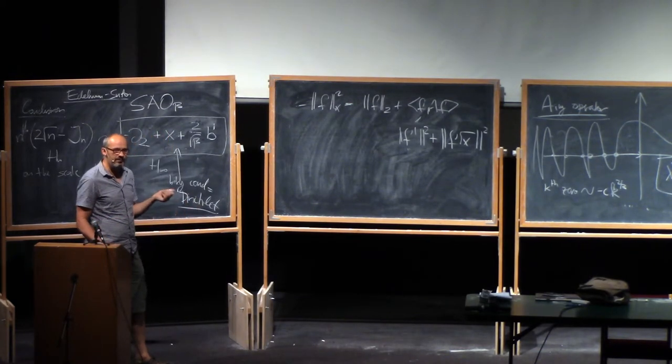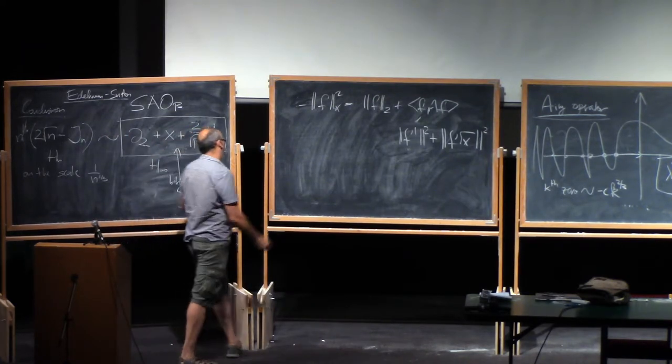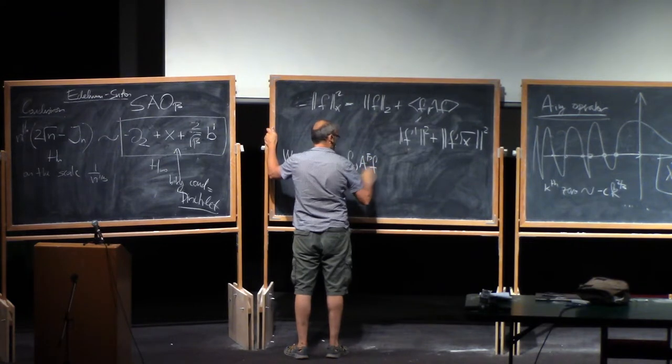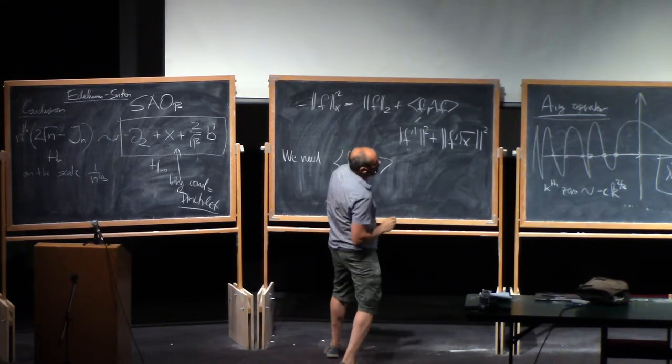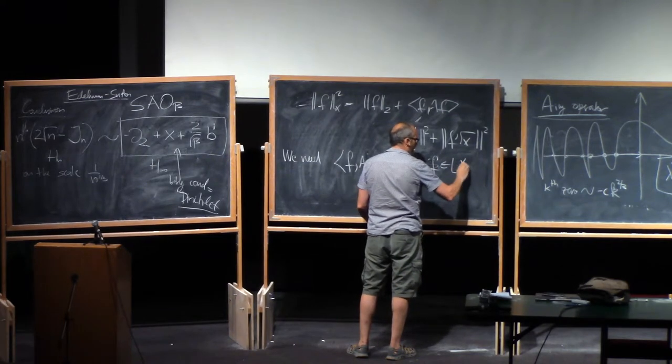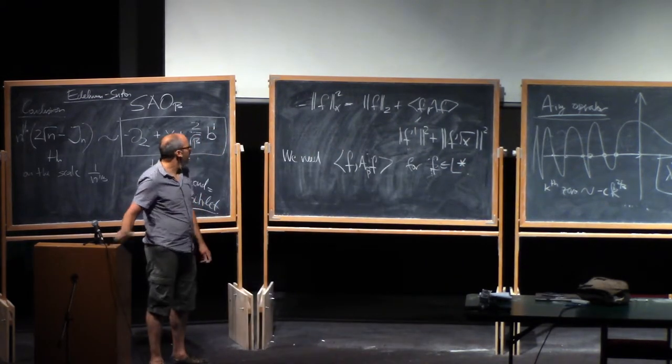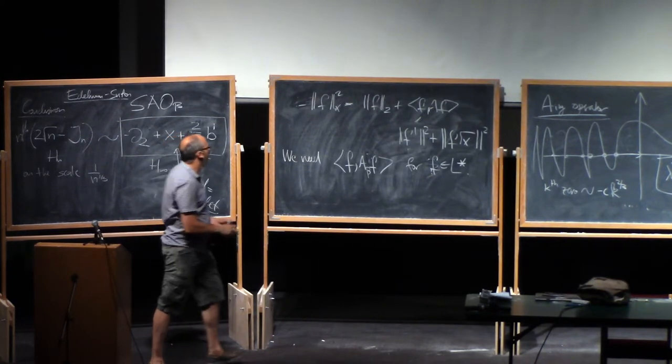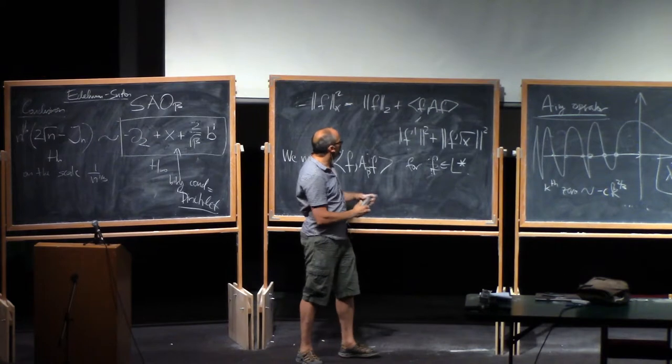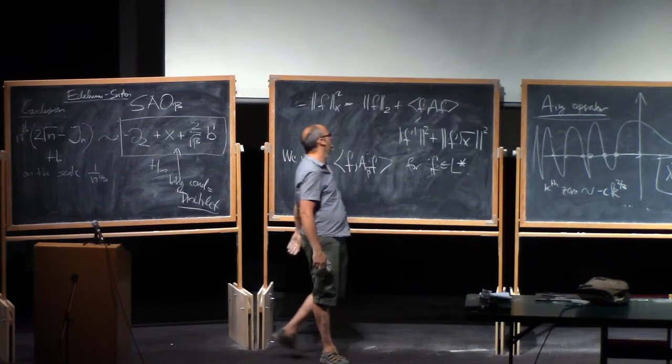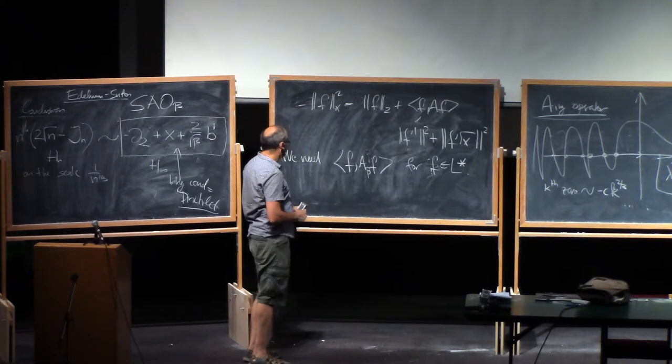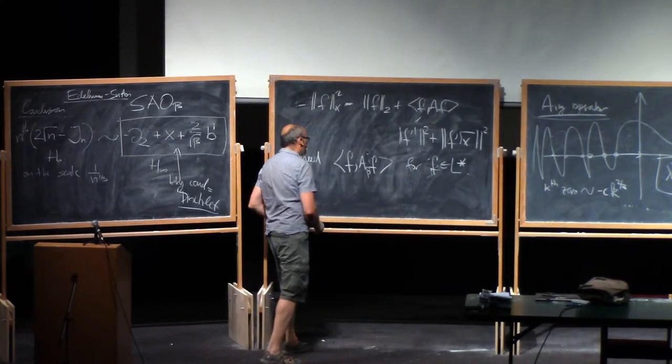So we need to compute F A beta F for F in L star. In the first line, it's F comma A F. A is just the ordinary area operator. So you don't take the norm of A F, you take F comma A F. That's why you have this square root.